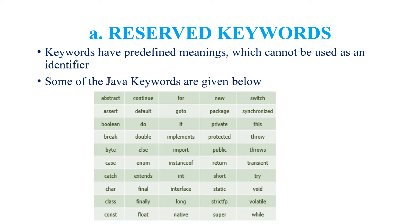Now we are going to see the types of tokens. The first one is reserved keywords. What are keywords? Keywords are nothing but predefined words, otherwise they are called as reserved words. That is, they cannot be used as an identifier. There are many keywords in Java. Some of them are listed below, that is abstract, if, private, static, etc.